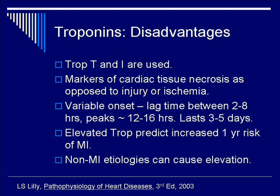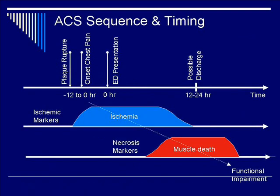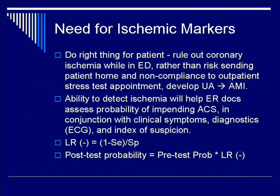The disadvantage of troponins is that it is a marker of ischemic necrosis, as opposed to injury or ischemia, and has variable onset. Going back to the pictorial, when necrosis markers such as troponins are elevated, you already have a certain extent of muscle death. Therefore, it is clear that we need ischemic markers that are accurate and diagnostic.